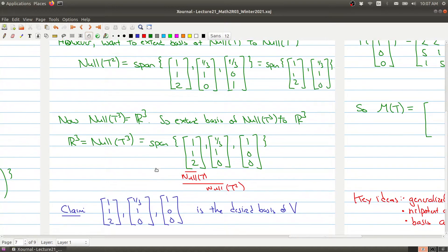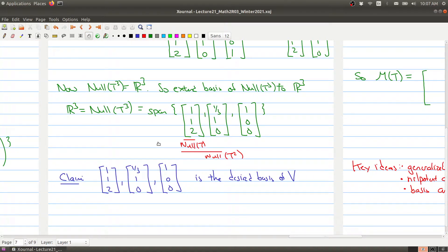And then the claim is that this is the desired basis that we need. Now I just want to point out that I'm writing all of my vectors as column vectors where the book would normally write these as row vectors.